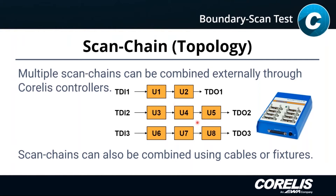If you do break these out into multiple chains, that's okay. We have hardware that will connect them together — you just plug each connector into a different tap on our JTAG controller. You can combine them using cables or fixtures, but we recommend against it. We've found that using cables and passive solutions tend to have signal integrity problems.